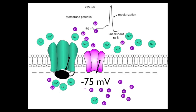You might wonder why the membrane potential is driven to the potassium equilibrium potential. The reason is that the inactivation gates on the sodium channels are closed and the potassium channels are open. At that little patch of membrane, only potassium channels are open — in other words, the membrane at that point is purely permeable to potassium, and only to potassium, and thus it approaches the potassium equilibrium potential.